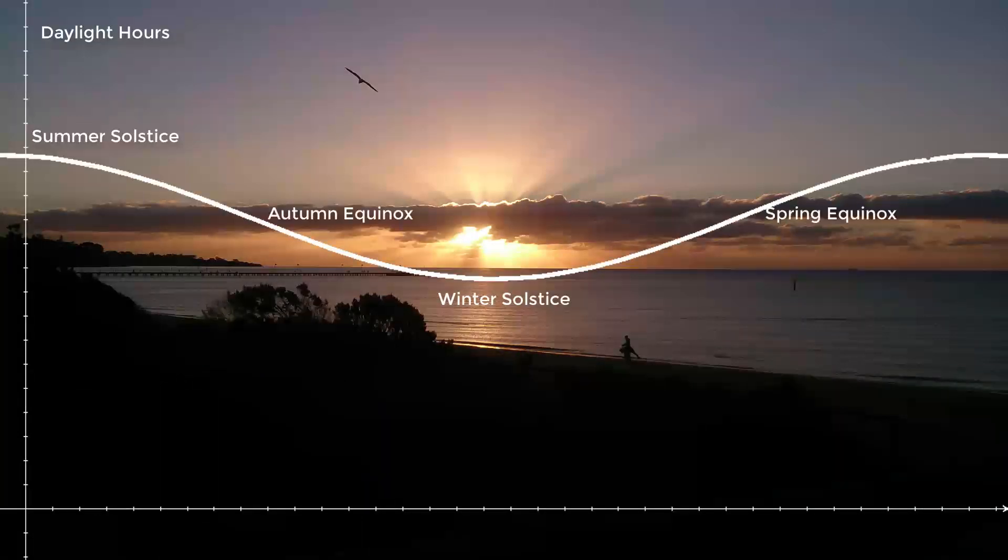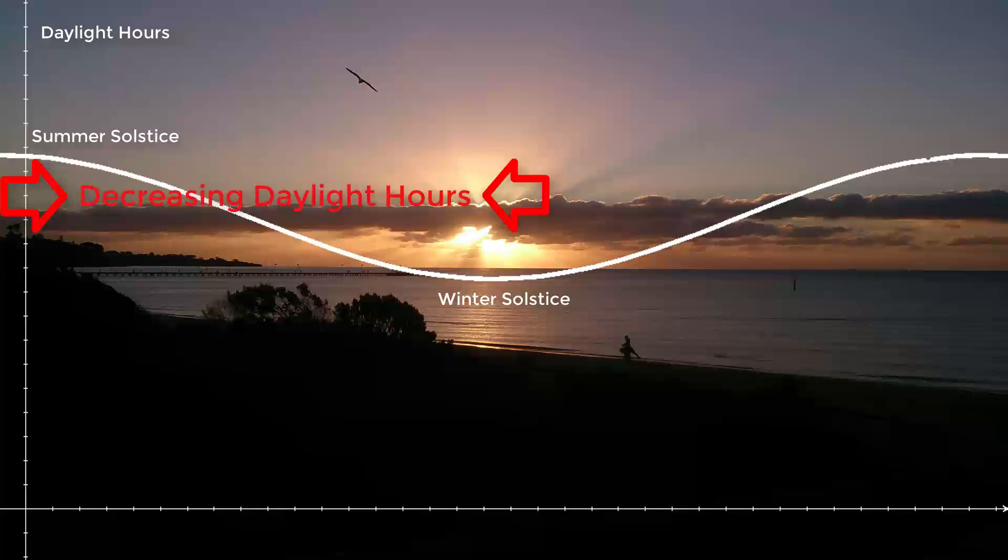not the autumn and spring equinox. The daylight hours graph is a decreasing function from late December through to mid June and then increasing for the other 6 months.